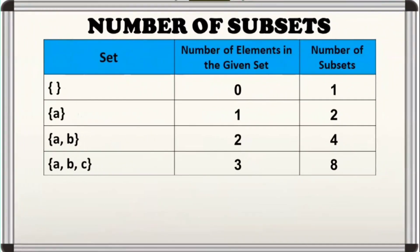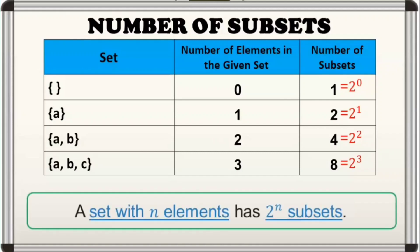May napapansin ba kayong pattern? In the number of subsets column, we know that one can be written as two to the power of zero, since a non-zero number with exponent zero is always equal to one. Also, two is equal to two to the power of one, four is equal to two to the power of two, and eight is equal to two to the power of three. The exponents of the powers of two correspond to the number of elements in the given set. So a set with n elements has two to the power of n subsets.